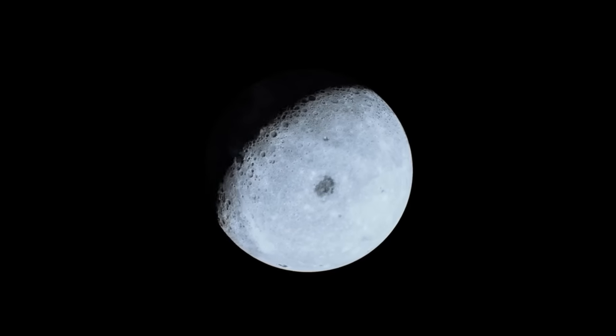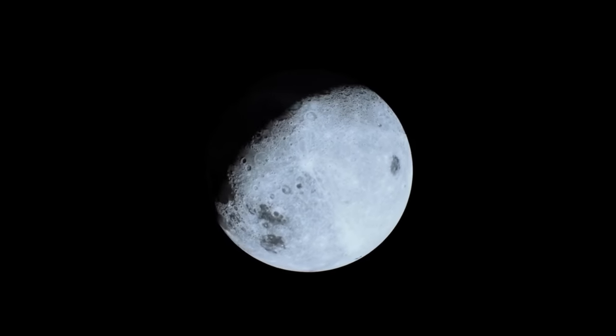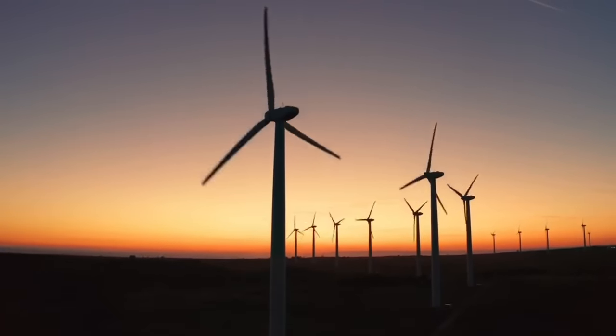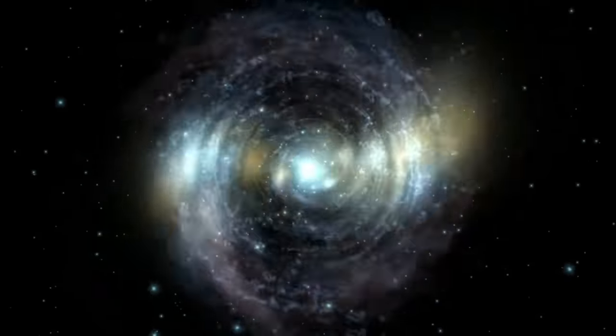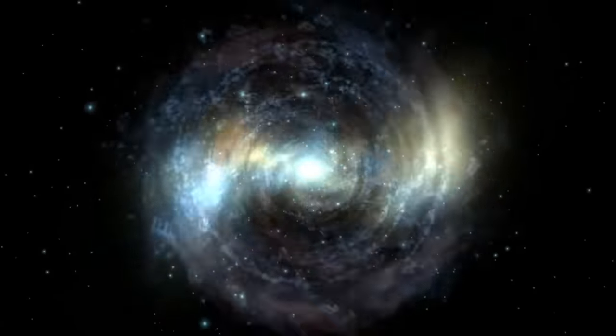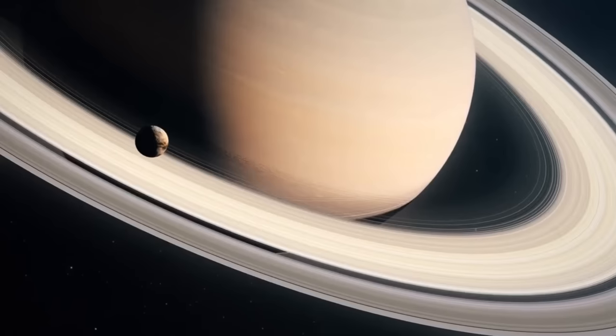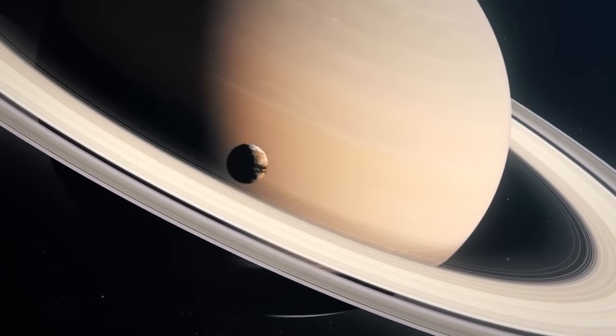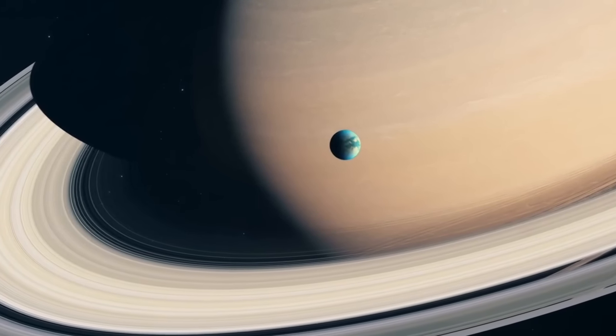We are talking about Titan, Saturn's biggest moon, the second largest moon in the solar system after Jupiter's satellite Ganymede. It is the only celestial body, except for Earth and Mars, for which the existence of liquid on the surface has been proven. It's also the only moon with a dense atmosphere.